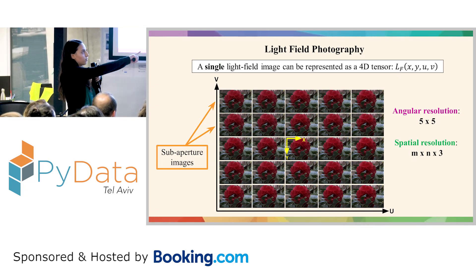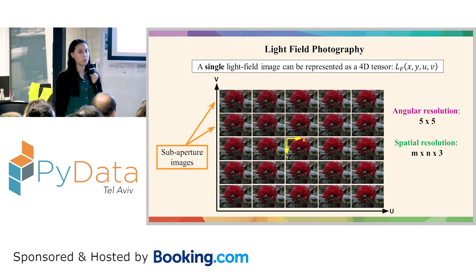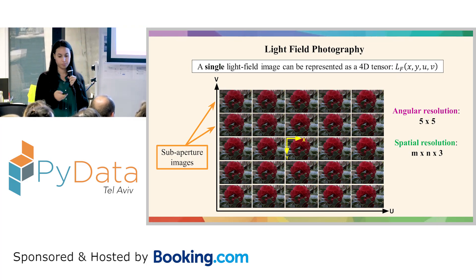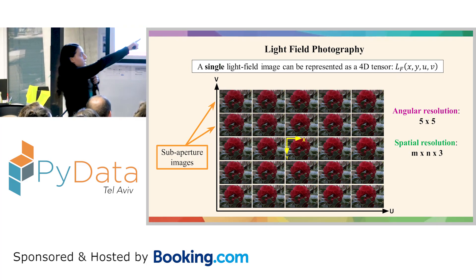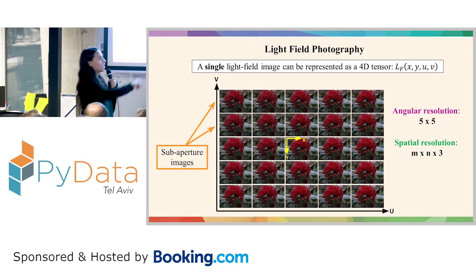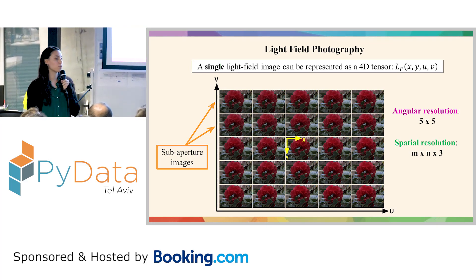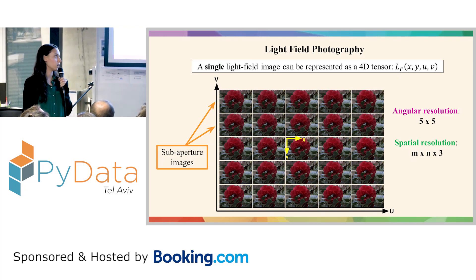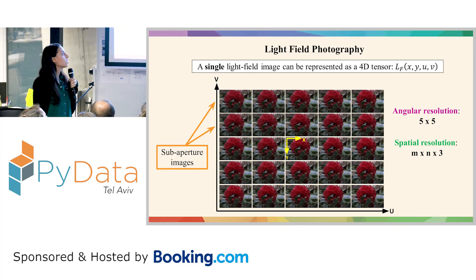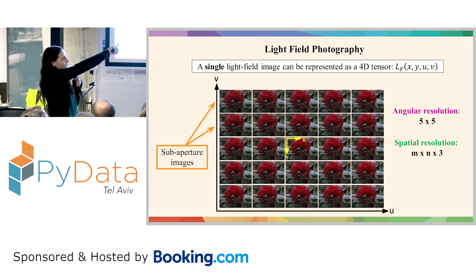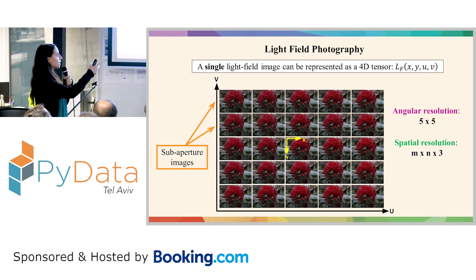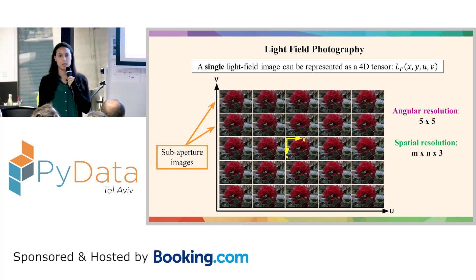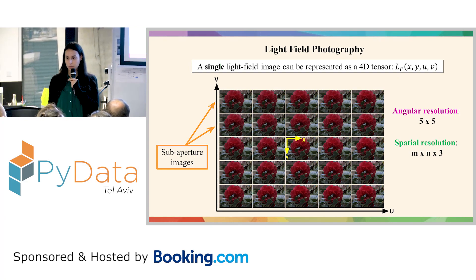This is an example of a 5 by 5 angular resolution, and each one of these images has a spatial resolution of M by N by 3, because this is a color image, and the spatial coordinates are X and Y. Each one of these images is called a sub-aperture image.